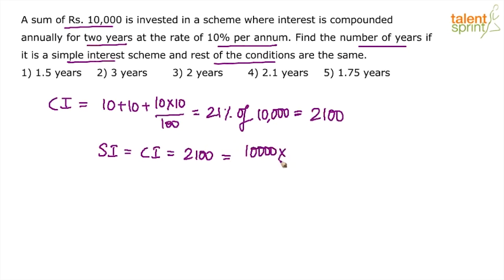P into time. And so what do you have to calculate? Find the number of years. T has to be calculated. Rate of interest remains 10 divided by 100. So what happens? All these zeros get cancelled. Time will be equal to 21 by 10.